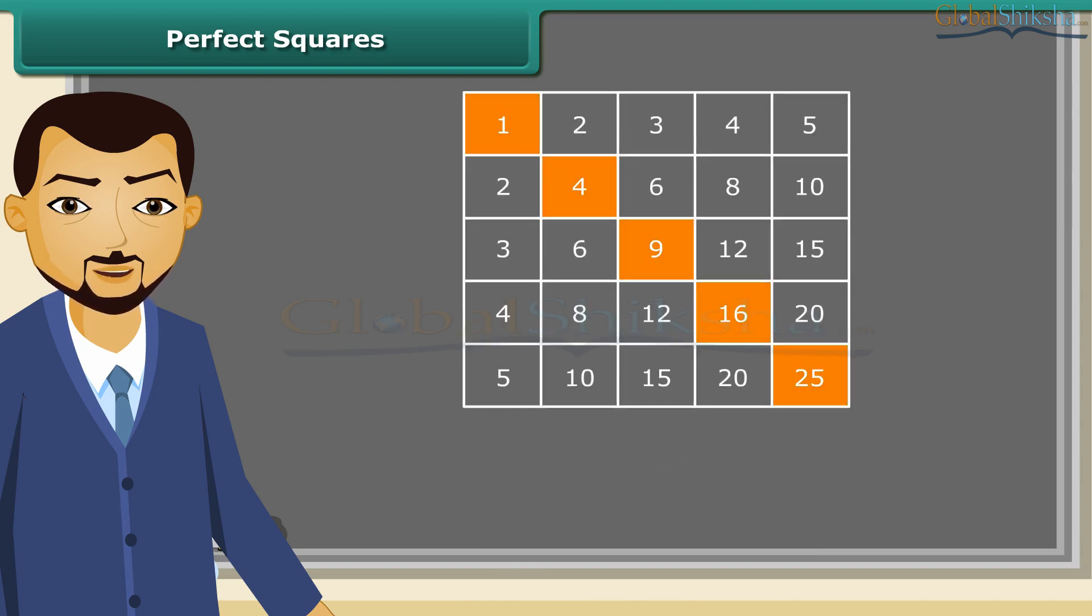Do you know what do we call these numbers? They are called perfect squares. The perfect squares are the squares of the whole numbers.